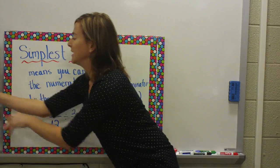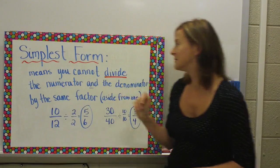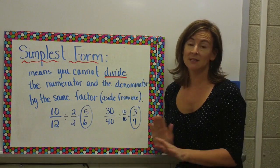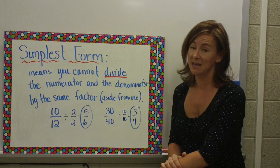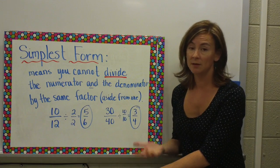Let's take a look specifically at what simplest form means. Simplest form means that you cannot divide the numerator and the denominator by the same factor, aside from the number one.